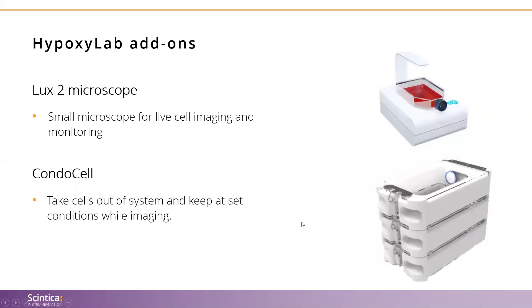Moving on to a couple of the add-ons for the Hypoxylab. First, there is an internal microscope that can be added: the Cytosmart Lux2. This is a compact inverted microscope for bright-field live cell imaging in situ within the Hypoxylab. It supports single cell images, time-lapse videos, and can even provide confluency data. It supports imaging of cell division, monitoring of cell growth and confluence, analysis of cell migration, wound healing, and scratch assays. It can also be used in nearly any standard incubator, making it a dynamic research tool for remote imaging purposes.